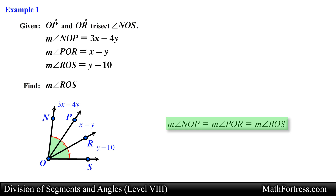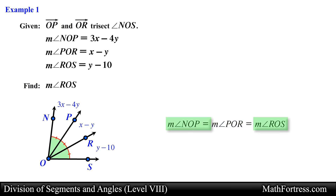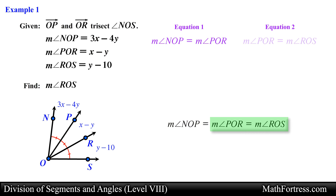From this geometric relation we can set up three distinct equations. The first equation is the measurement of angle NOP equals the measurement of angle POR. The second equation is the measurement of angle POR equals the measurement of angle ROS. The third equation is the measurement of angle NOP equals the measurement of angle ROS. For this problem we only need two equations to solve the system in two variables, x and y. So let's use the first two equations and substitute the corresponding algebraic expressions for each angle.